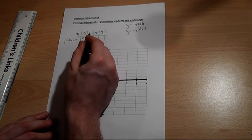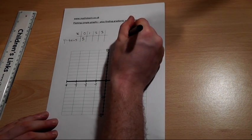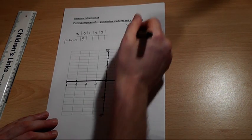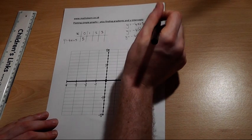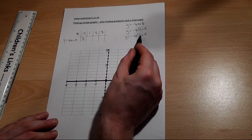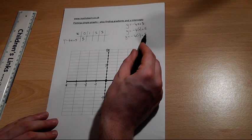When x is 1, y equals minus 4 lots of 1 plus 5. Well, minus 4 times 1 is minus 4, add 5, we get to plus 1.